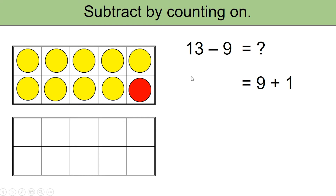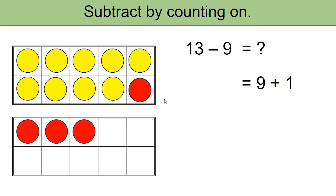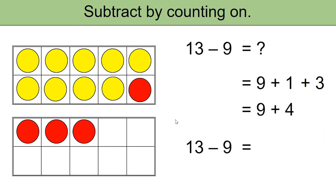Since we already have 10, let's count on: 11, 12, 13. We needed to add 3 more. So we now have 9 plus 4. Therefore, 13 minus 9 is the number of red counters: 1, 2, 3, 4. 13 minus 9 is equal to 4.